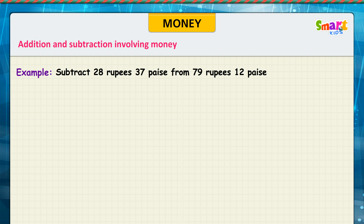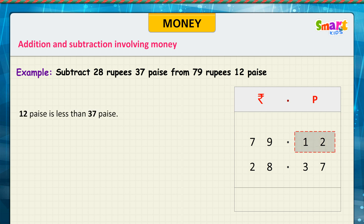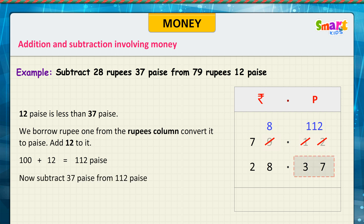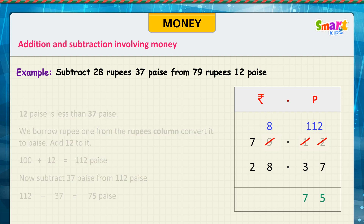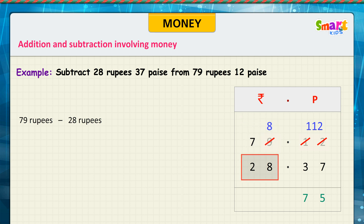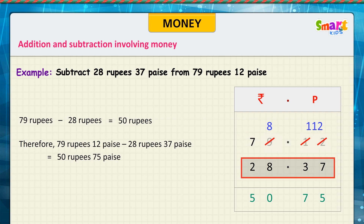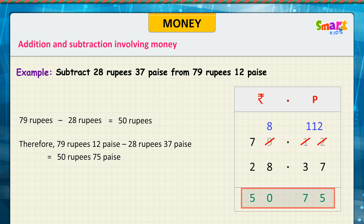Subtraction using decimal. Look at the problem. 12 paise is less than 37 paise, so we borrow rupee 1 from the rupees column and convert it to paise. Add 12 to it: 100 plus 12 is equal to 112 paise. Now subtract 37 paise from 112 paise. 112 minus 37 is equal to 75 paise. 79 rupees minus 28 rupees is equal to 50 rupees. Therefore, 79 rupees 12 paise minus 28 rupees 37 paise is equal to 50 rupees 75 paise.